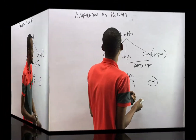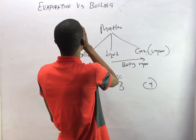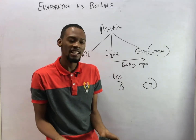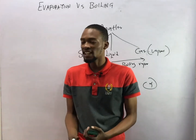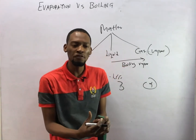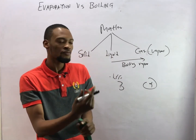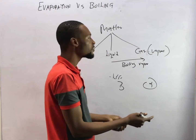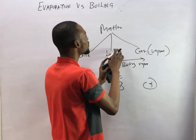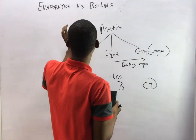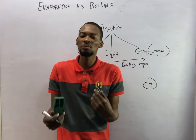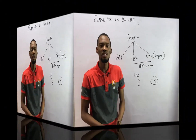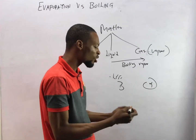Both evaporation and boiling lead to a change in state. While boiling, the water or liquid changes from liquid form to vapor. Evaporation also causes a change of state from liquid to vapor. So in both cases, liquid is being converted to vapor. Now, what are the differences between them?